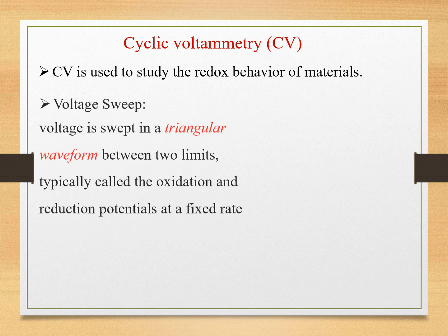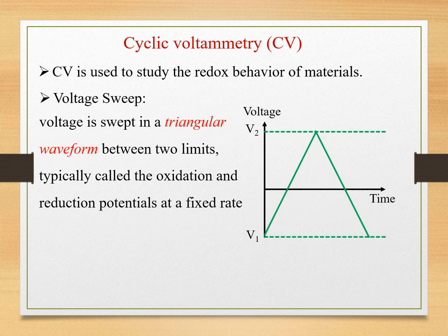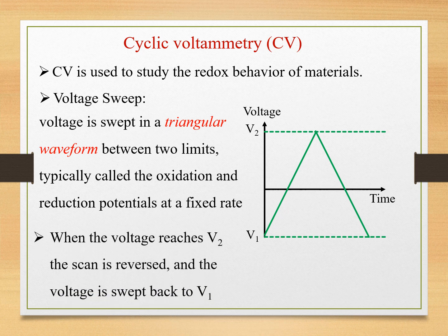And the next one is cyclic voltammetry. CV is used to study the redox behavior of the material. In this case, the voltage is swept in a triangular waveform between two limits, typically called the oxidation and redox potential, at a fixed rate. When the voltage reaches V2 from V1, the scan is reversed and the voltage is swept back to V1. That is, the potential is swept in both directions from V1 to V2 and then V2 to V1. The potential is cycled and that is why the name cyclic voltammetry.